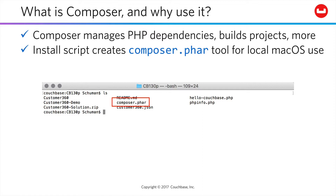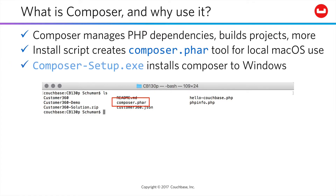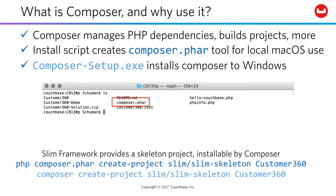Of course, you could also configure it for global use within Mac. If you're working on Windows, it's also easy to use this executable to install Composer, and we'll show this in the lab — it'll expose Composer globally for use from your command line within Windows. Slim provides a skeleton project that is installable using Composer. If you're using the composer.phar tool, you would invoke that through the PHP command to create this Slim skeleton project, which in our labs will be called Customer 360. If you have Composer installed globally, then you would use the Composer tool directly as shown. All this is covered in the workbook.